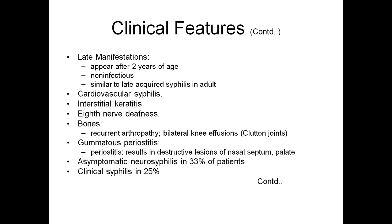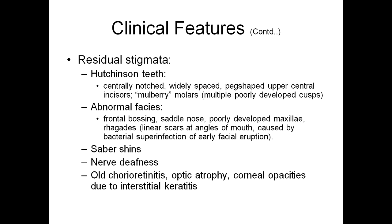Late manifestations appear after two years of age; by that age the child is non-infectious. It is similar to late acquired syphilis in adults. The patient can present with cardiovascular syphilis, interstitial keratitis, eighth nerve deafness, and bone involvement — bilateral knee effusions, Clutton joints, gummas, and periostitis. Clinical neurosyphilis may be present in 25% of patients and asymptomatic neurosyphilis in 33% of patients. Residual stigmata include Hutchinson teeth — centrally notched, widely spaced peg-shaped upper central incisors — and mulberry molars. Abnormal facies: frontal bossing, saddle nose, poorly developed maxilla. Rhagades — linear scars at angles of mouth caused by bacterial superinfection of early facial eruptions. Also sabre shins, nerve deafness, optic atrophy, and corneal opacities.